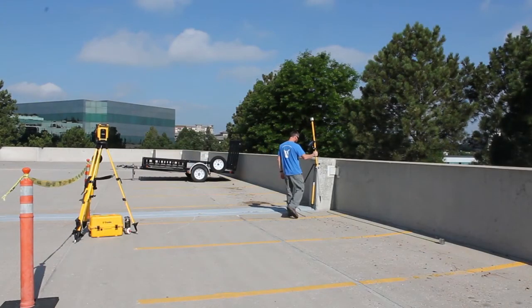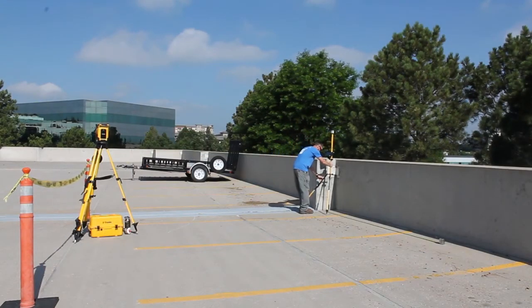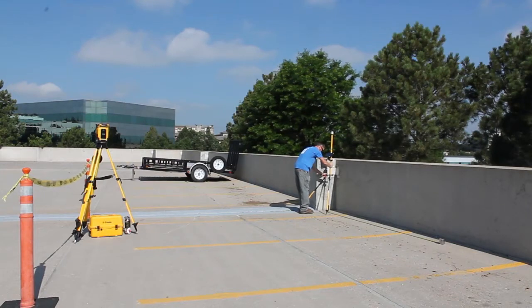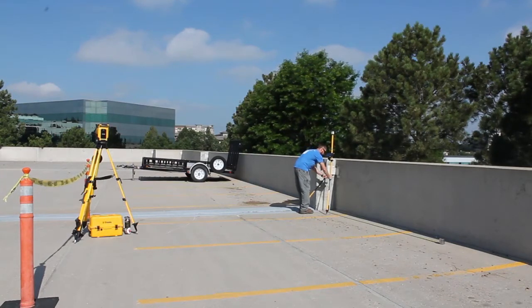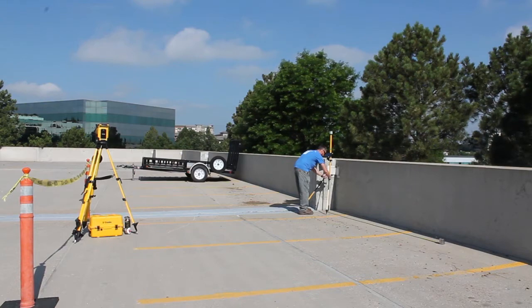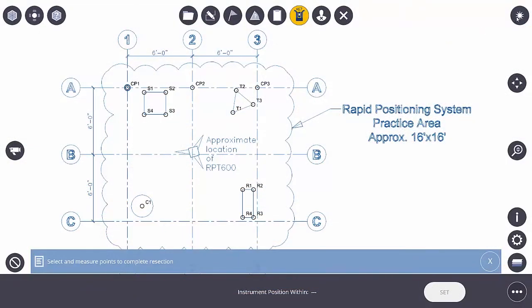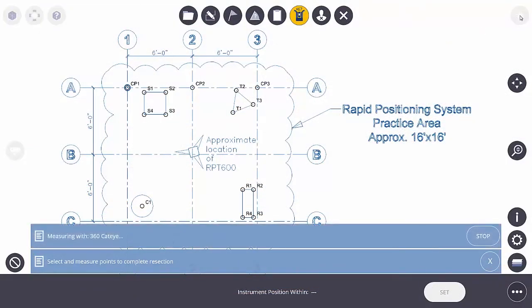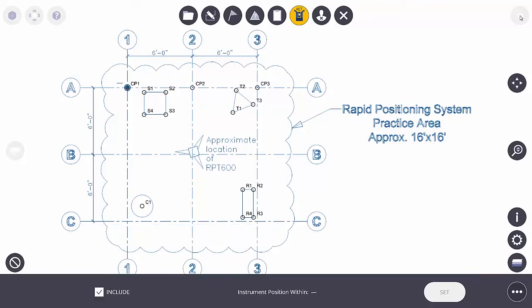Once I have my point selected and I walk my prism over to that point and physically set up on top of it on the job site, I make sure that my prism pole is plumb and I press the shoot button. It says it's measuring the 360 cat eye target and now I've got my first control point shot in.